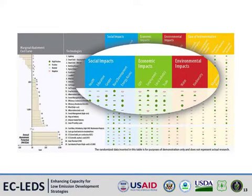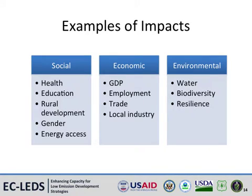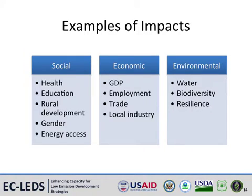This slide zooms in on the impact categories included in the framework. Users can adapt the tool to focus on specific impacts of most interest and aligned with the country's or jurisdiction's development goals. Common impacts included in the DIA framework include social development impacts such as energy access, health, education, and gender; key economic impacts such as employment, local industry development, GDP, and trade; and key environmental impacts such as water use, biodiversity, and climate resilience. Countries can choose impacts for assessment based on key national or sub-national development goals.